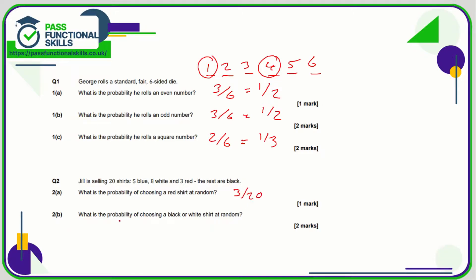What's the probability of choosing black or white? So we know that eight are white. We need to work out how many are black first of all. There's 20 in total. Eight plus three is 11, plus five is 16.